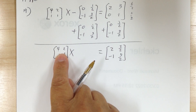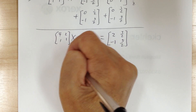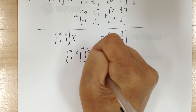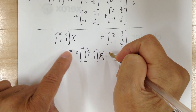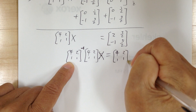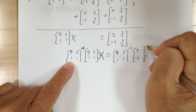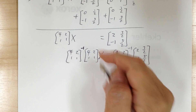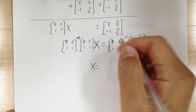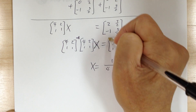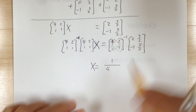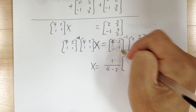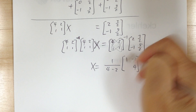Now to solve for X, multiply by the inverse of [4,1;2,1] in the front on both sides. The matrix times its inverse cancels to give X. The inverse is 1 over the determinant times the adjusted matrix: determinant is 4 minus 2, which is 2. Switch the diagonal elements to get 1 and 4, and put negatives on the off-diagonal.